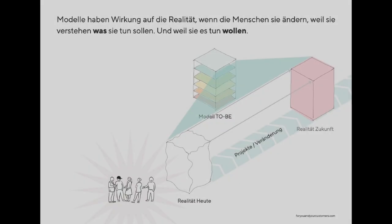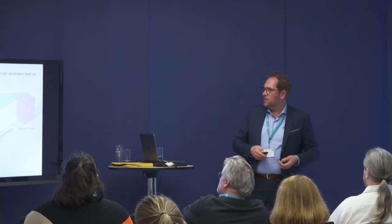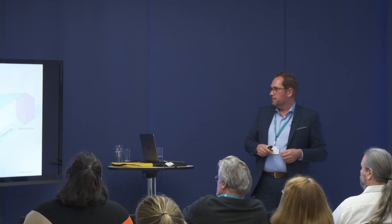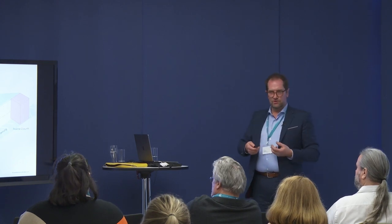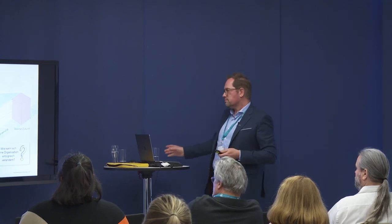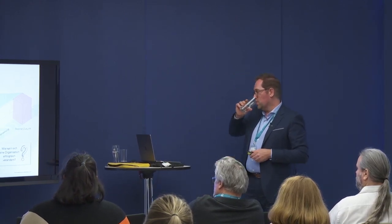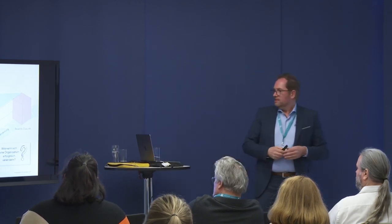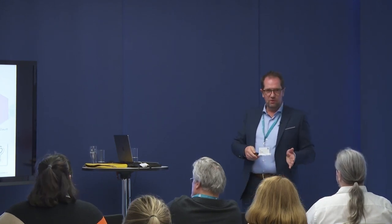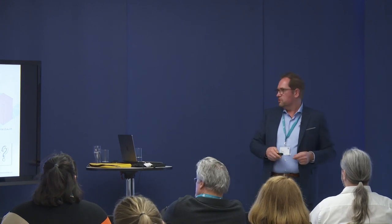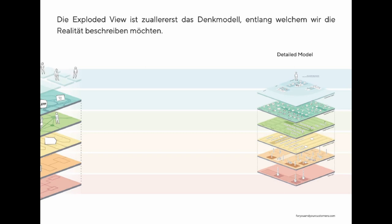Why do you do such a thing? You want to customize the message for the people. You have to communicate with many people in the company — people who want to understand why you're doing this or that. There are two basic questions: how can an organization come up with value-added models? And how can an organization change successfully? Each person interprets a situation differently because they're more or less involved. What is successful change? How fast? What are the constraints surrounding it?